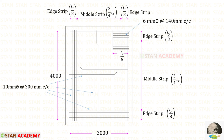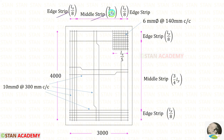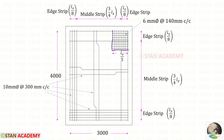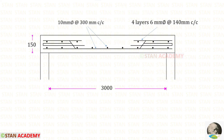The reinforcement details are shown in the plan. For the short span, long span, and edge strips, we provide 10 mm diameter bars at 300 mm center-to-center spacing. From IS code page 90, the slab is divided into edge strip, middle strip, and edge strip. Torsion reinforcement in four layers is provided at all four corners over a distance of LX/5 in each direction. This concludes the design. Thank you for watching.